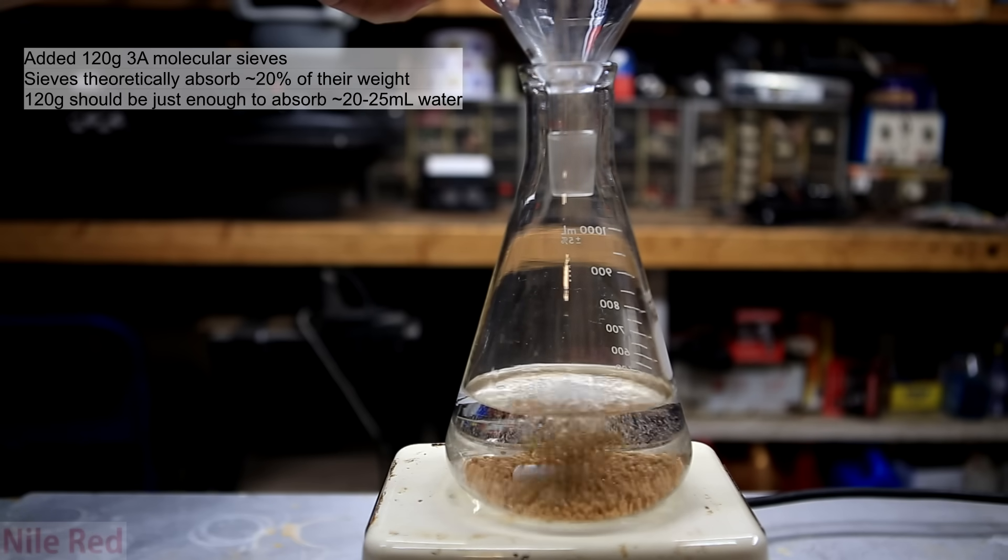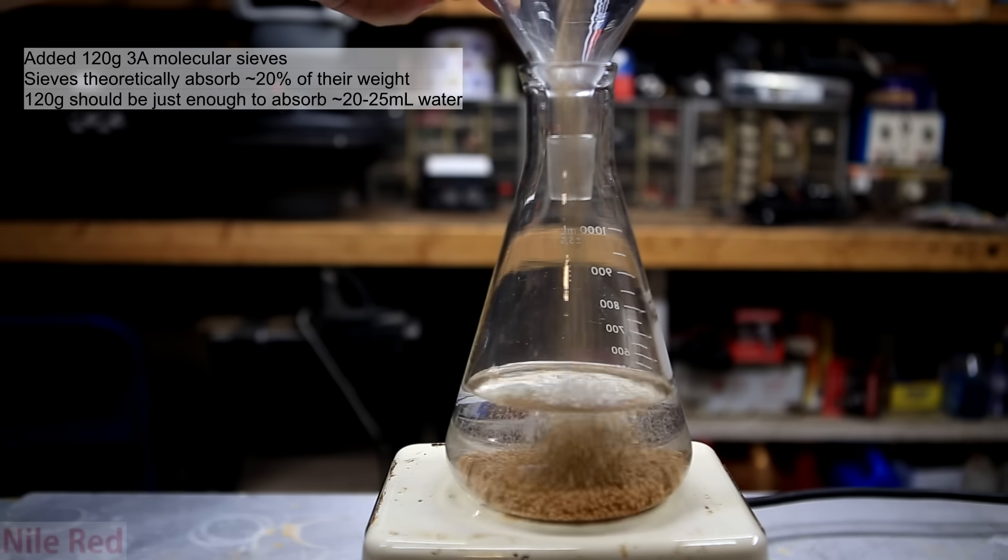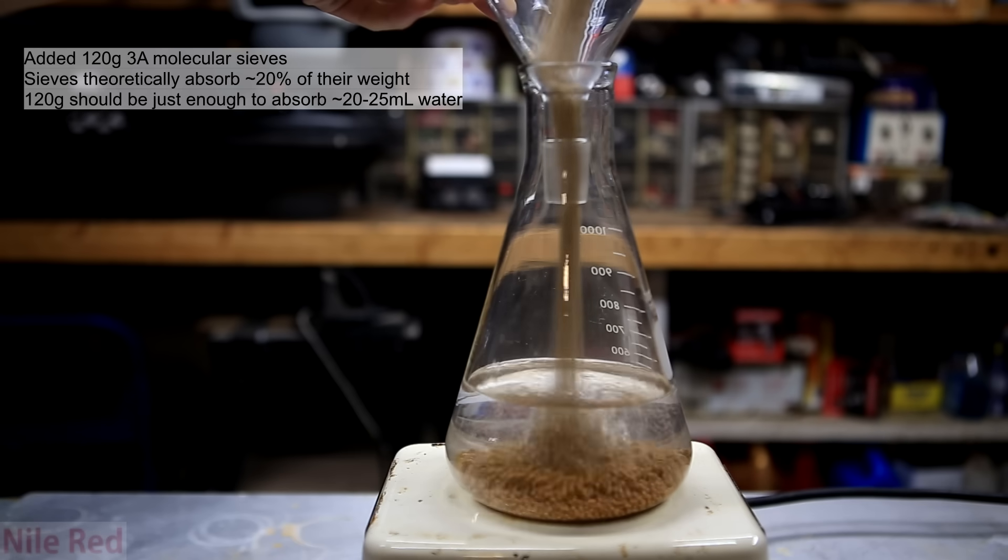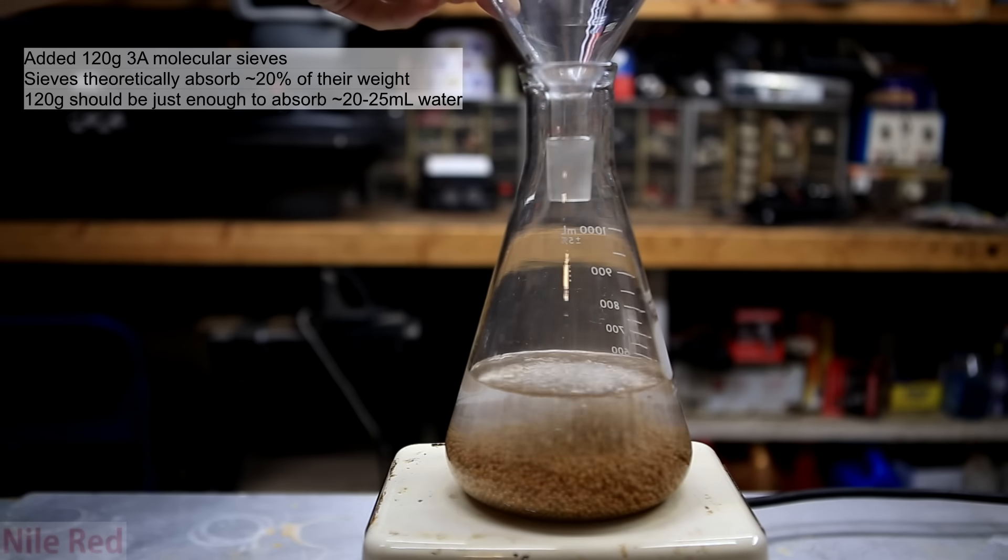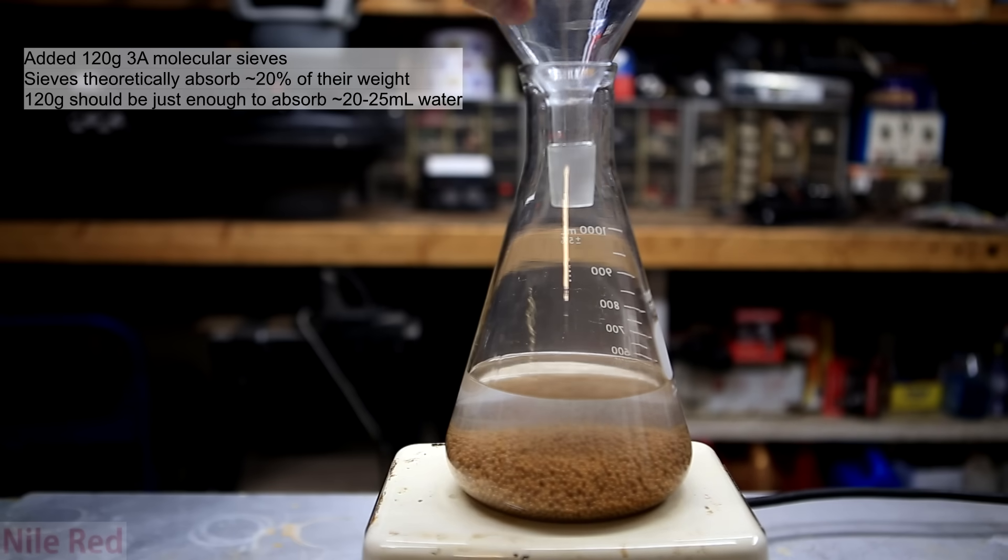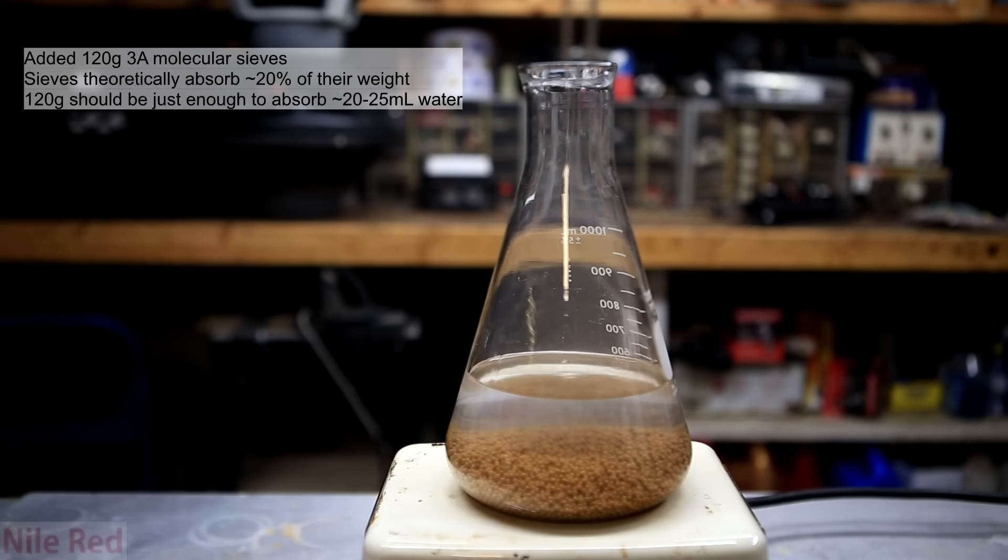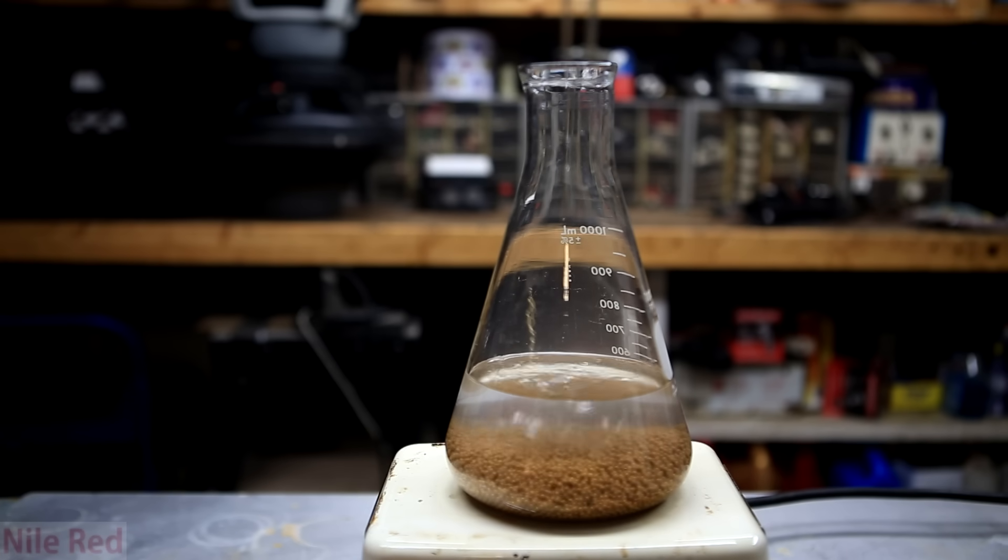For my drying agent, I use what's known as molecular sieves. These little sieves have very small pores in them which can absorb water, but the pores are too small to allow any other larger molecules to enter. So this means that the small water molecules can find their way in and bind to these little beads, but the ethanol is too big to do this and will be left untouched.